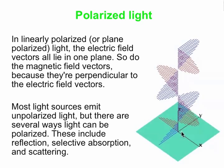Most light sources, such as a regular incandescent light bulb or the sun, emit unpolarized light. But there are several ways in which light can be polarized. You can polarize light by reflection, by what's called selective absorption — we'll talk about that in a minute — and also by scattering, which is what happens with light in the atmosphere.